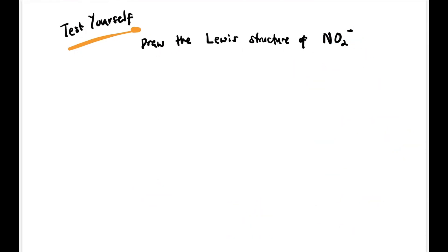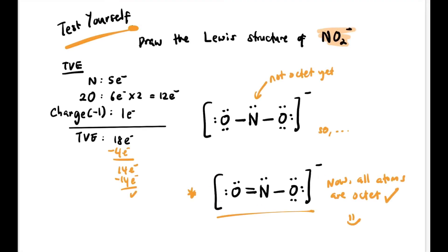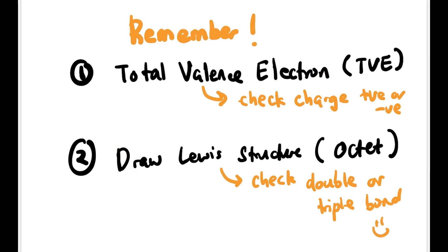Let's try drawing the Lewis structure for NO₂⁻ — you may pause the video. Here is the answer. Remember the steps: first calculate total valence electrons (TVE), check the charge (positive, negative, or neutral), draw the structure, make sure all atoms are octet, and check whether you need to form double or triple bonds.